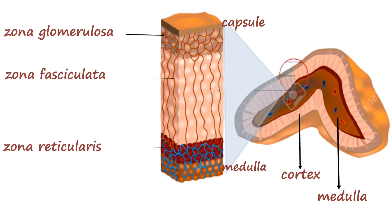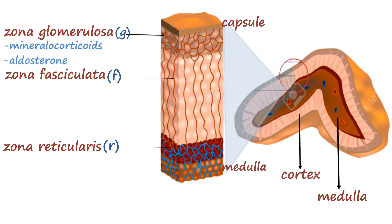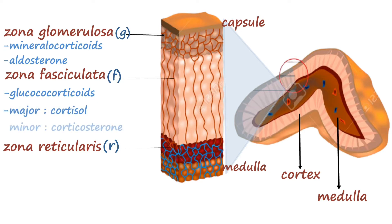You can remember these zones with the mnemonic GFR — glomerular filtration rate — from outside to inside. These three different zones secrete different types of hormones. The major hormone secreted by zona glomerulosa is mineralocorticoid, and the major mineralocorticoid is aldosterone. Zona fasciculata, which is the major zone, secretes glucocorticoid, while zona reticularis secretes androgens.